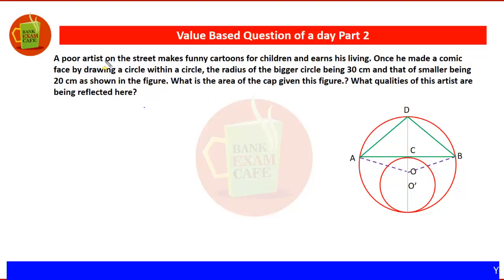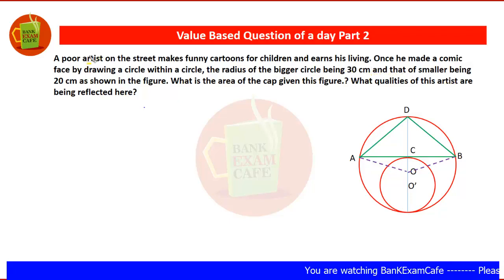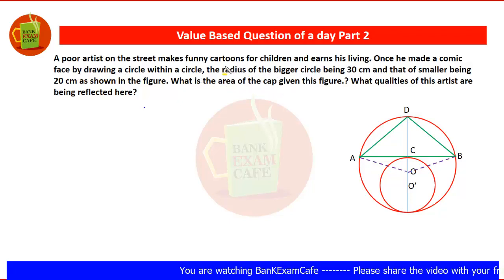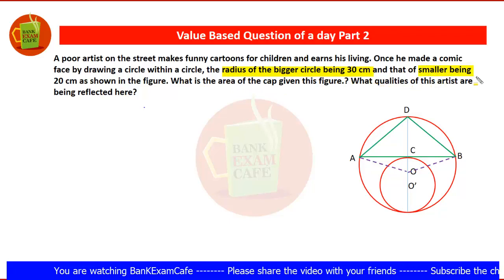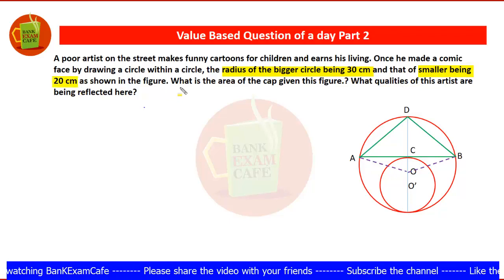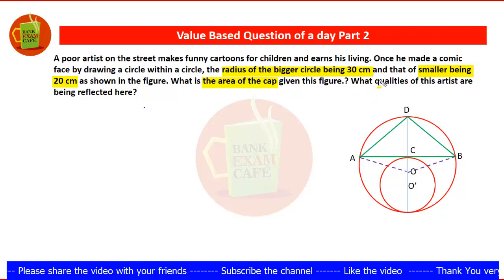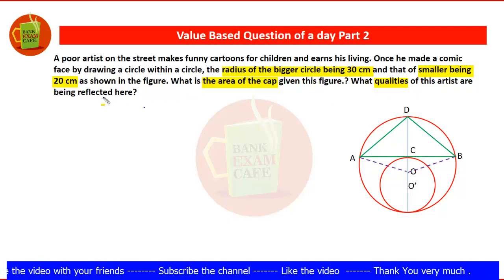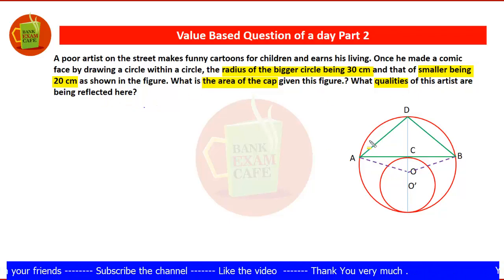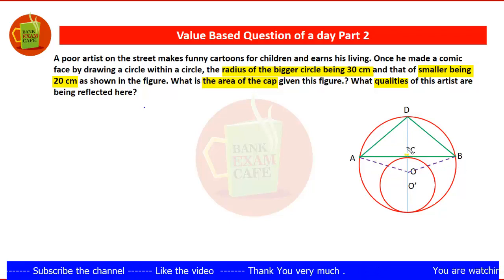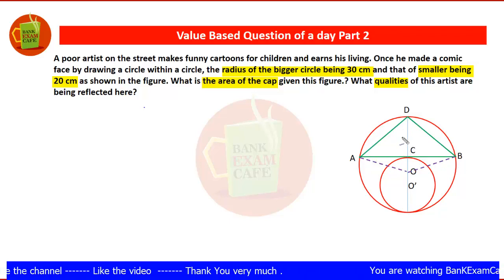Here is the question on the screen. A poor artist on the street makes funny cartoons for children and earns his living. Once he made a comic face by drawing a circle within a circle. The radius of the bigger circle is 30 centimeters and that of the smaller being 20 centimeters, as shown in the figure. What is the area of the cap given in the figure, and what qualities does the artist reflect? The triangle ABD is given as the cap.